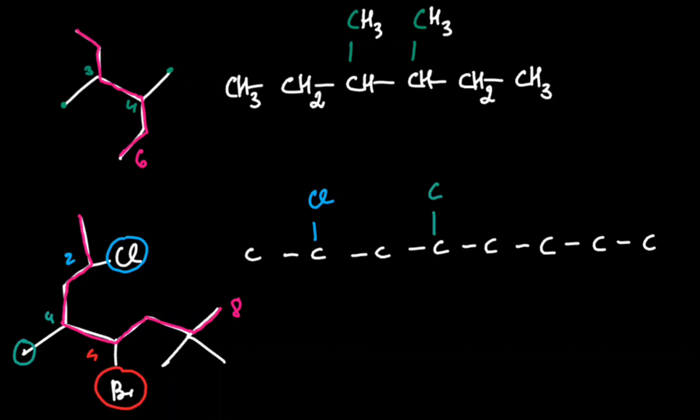On the fifth carbon, a bromine atom. And on the seventh carbon, there are two carbon substituents.